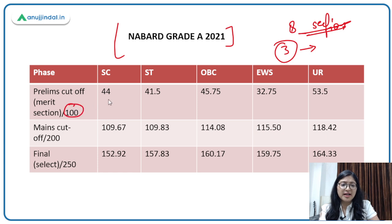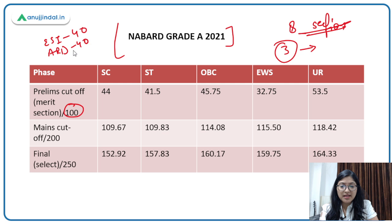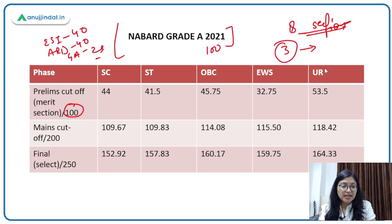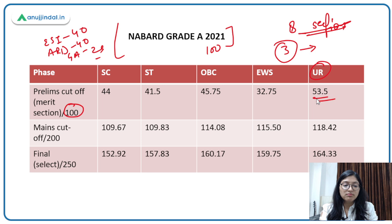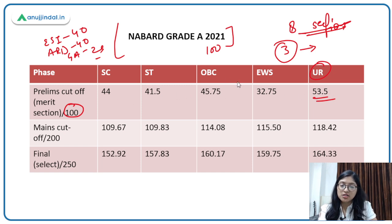Out of 100 marks, you have ESI with 40 marks, ARD with 40 questions and 40 marks, and GA with 20 questions and 20 marks. Looking at the cutoff, the general or unreserved category cutoff was 53.5 only, which is not very difficult to achieve — it's not impossible to get those marks. If you are able to create a smart strategy, you can easily get these marks.